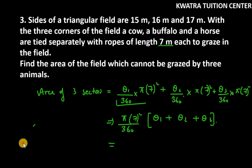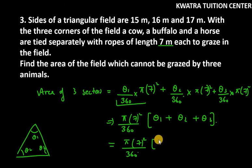So we know that sum of interior angles of a triangle is 180 degrees. Theta 1 plus theta 2 plus theta 3, how much? 180. So I will replace theta 1 plus theta 2 plus theta 3 with 180. Now you have to cut down the values. We will cut down 180 and 360. So this is 2.